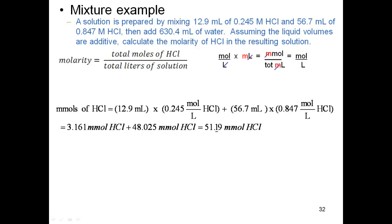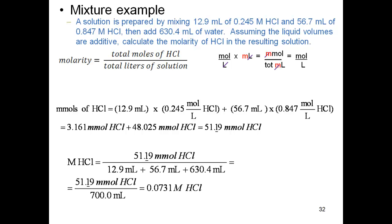Now that I have my total millimoles of HCl, I need to put that over total volume. I need to add that over my total volume, which we know we have 12.9 milliliters, 56.7 milliliters, and 630.4 milliliters. Add all those up, gives me 700 mL. So I have 51.19 divided by 700. Millimoles over milliliters - the millis cancel, leave me in moles per liter, which gets me 0.0731 molarity of HCl. 3 sig figs is my final answer.